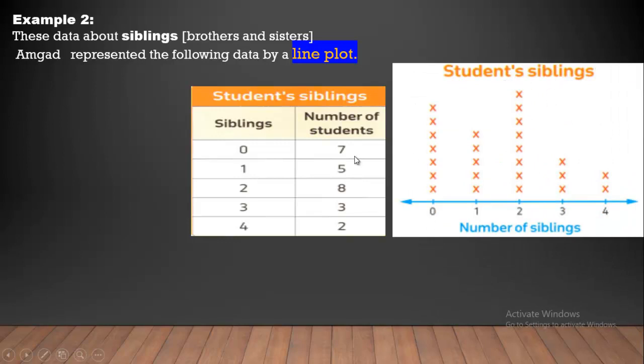Students' siblings here, number of siblings here, 0, 1, 2, 3, 4. Number of students at siblings 0 is 7. At 1, 5. We do 5 X's like this shape.